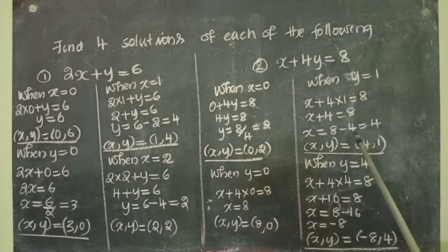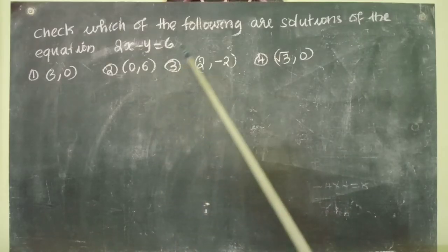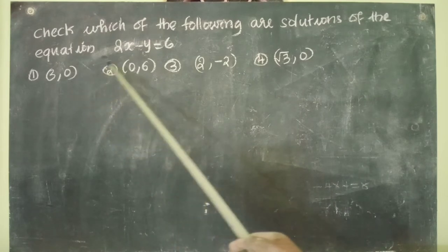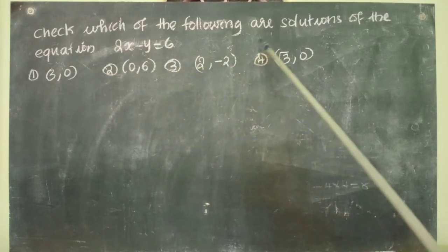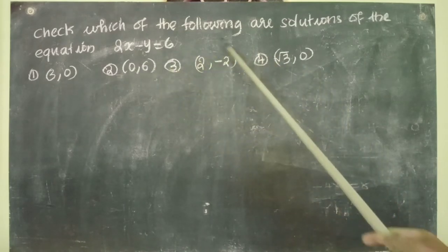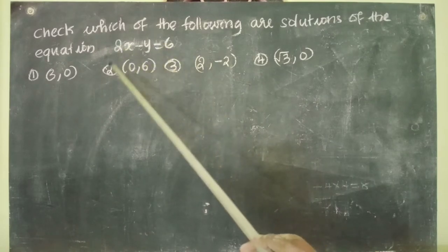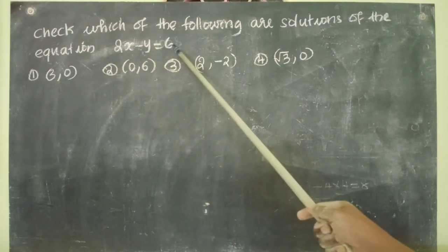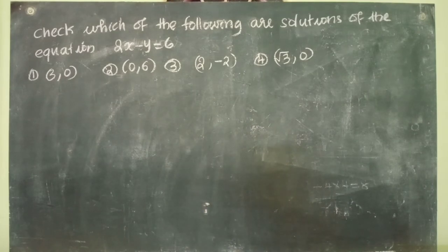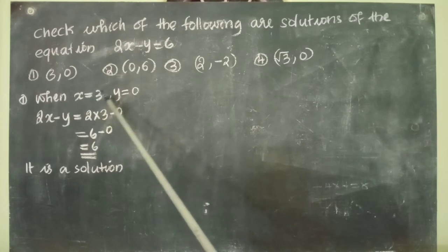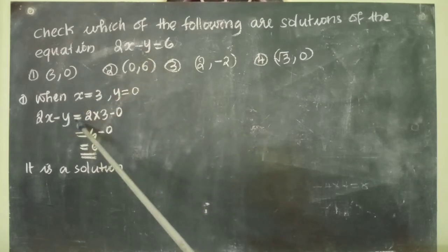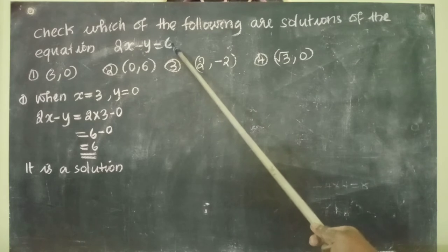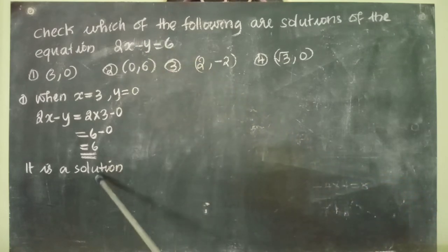Next question: check which of the following are solutions of the equation 2x minus y equal to 6. Four points are given: (3, 0), (0, 6), (2, minus 2), (root 3, 0). You have to give the values of x and y in the equation and check which are true. First point (3, 0): 2 into 3 minus 0 equals 6 minus 0 equal to 6. We got the answer 6, which matches the right side, so it is a solution.